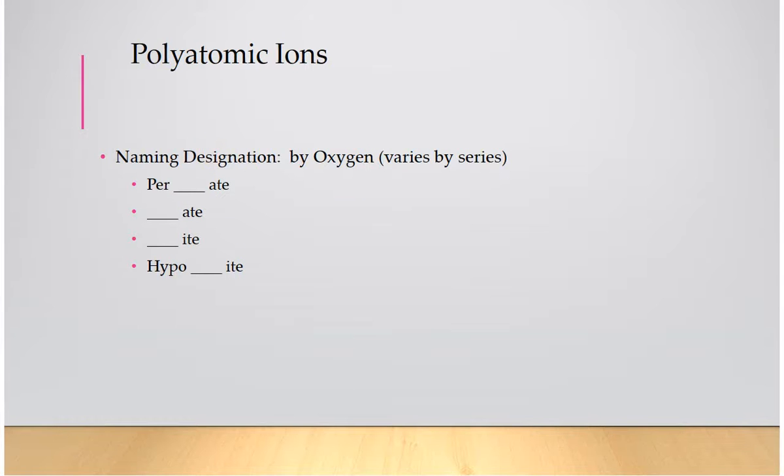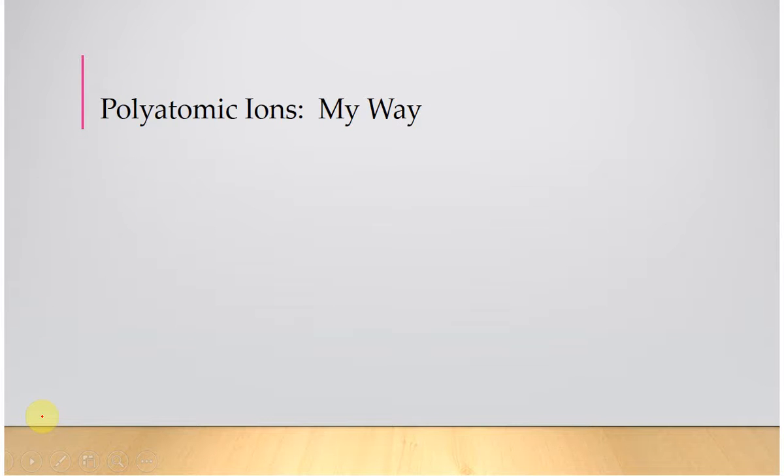So the trend or the rules is that you are going to name according to a series. So not all polyatomics contain a series, but if they do, it has to do with the oxidation number, which we talk about much later in the unit, but one of them is going to end with ate. The root of the first element's name and then ate. If you take away an oxygen, it's going to be ite. Take away another oxygen, hypo something ite. And then if you add oxygen to it, it's per something ate. So per ate, ate, ite, hypo ite.